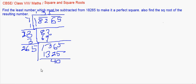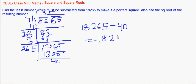That means if we subtract this 40, we'll get the number 18265 minus 40, which gives us 18225. That will be the number we find by subtracting 40, and the square root of this will be 135, which we have already calculated. Let us now move on to another question.